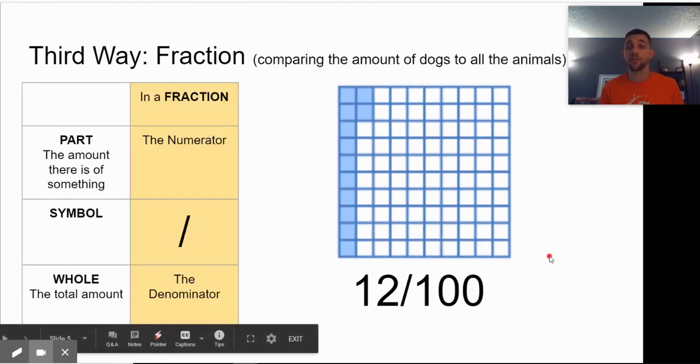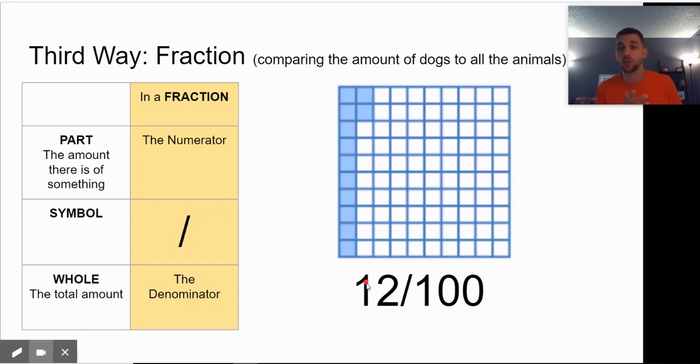If we wrote it as a fraction, we would write 12 blue shaded spaces out of 100 total. And we could simplify this fraction and say that if we divide by 4, 12 divided by 4 is 3 and 100 divided by 4 is 25. So that would be the same equivalent fraction. Same size, taking up the same space, but it's just using different numbers to say the same thing.